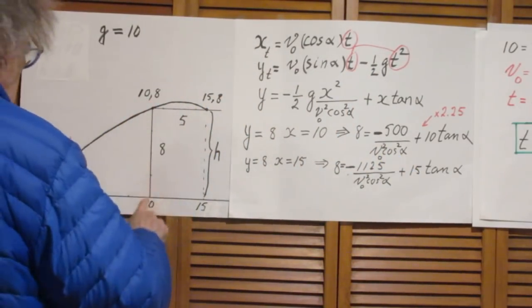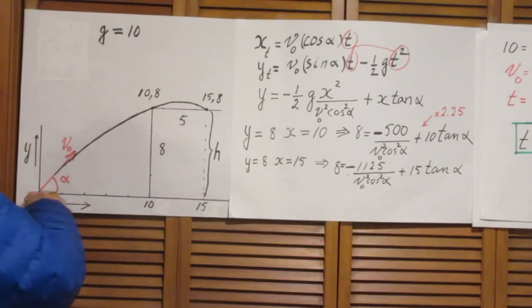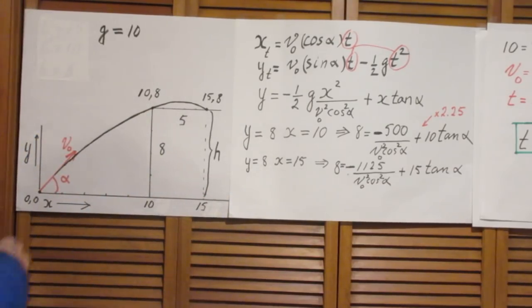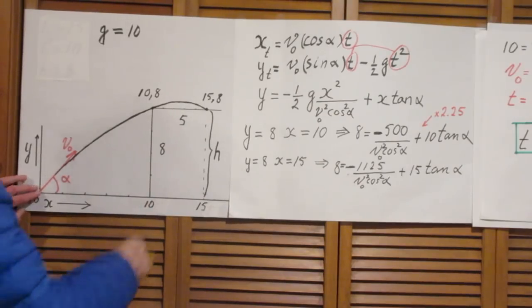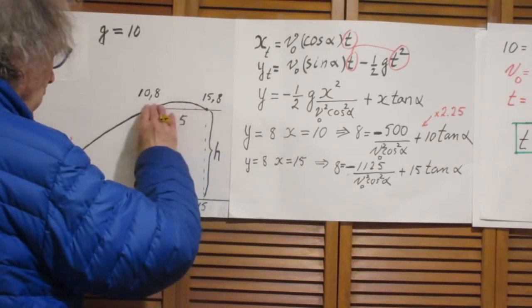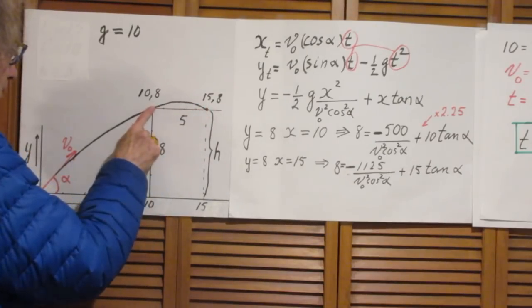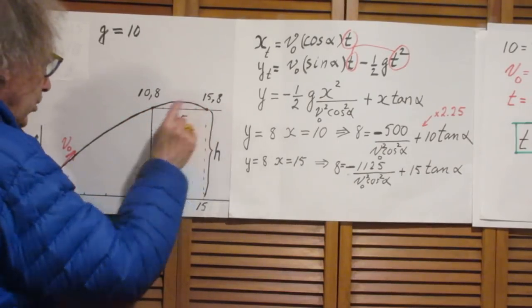Here is a building eight meters high. Here is a horizontal road. I'm standing here 10 meters from that building. On the roof of that building at a distance of five meters from the edge is my target.